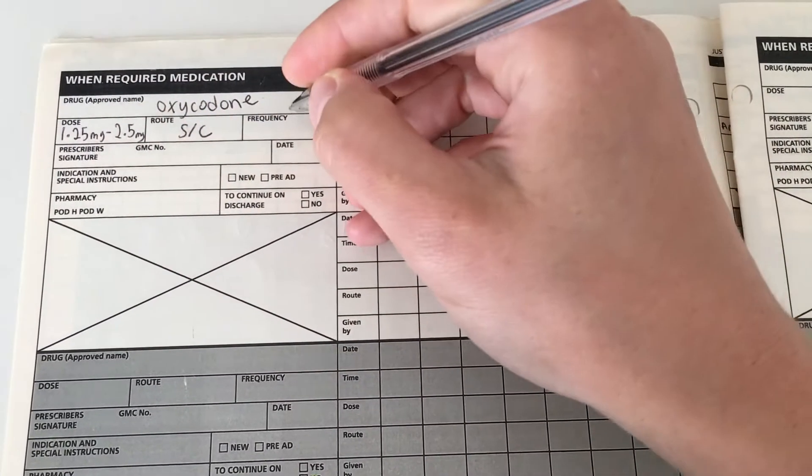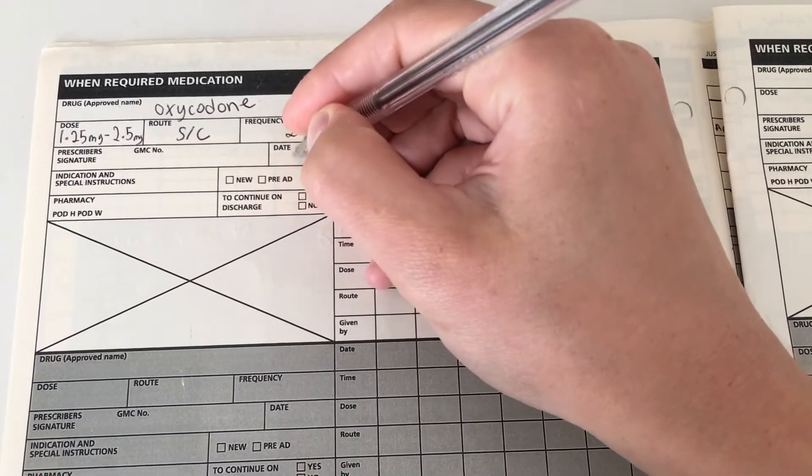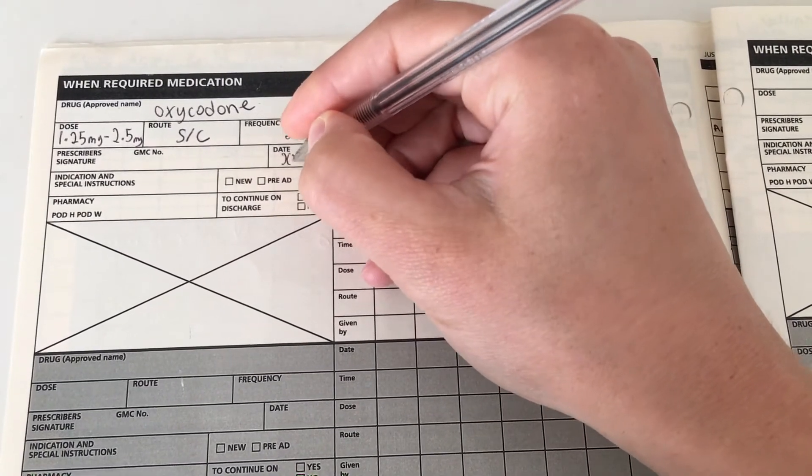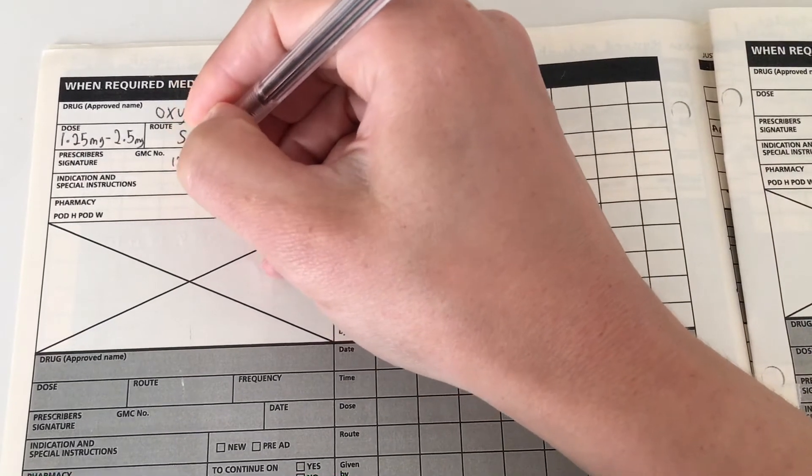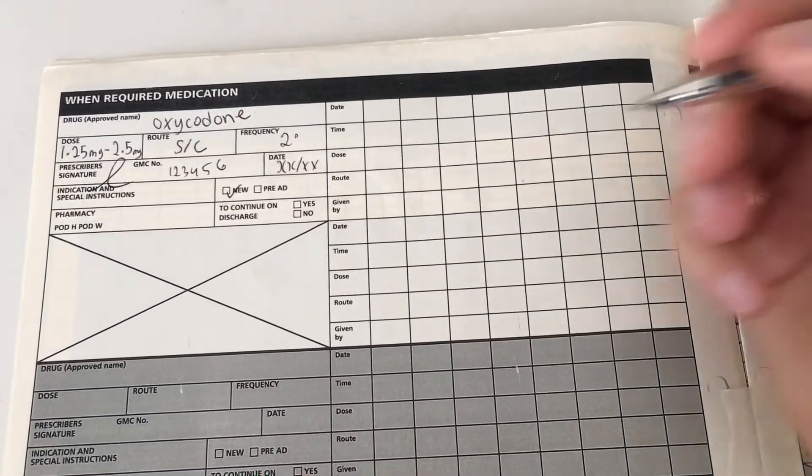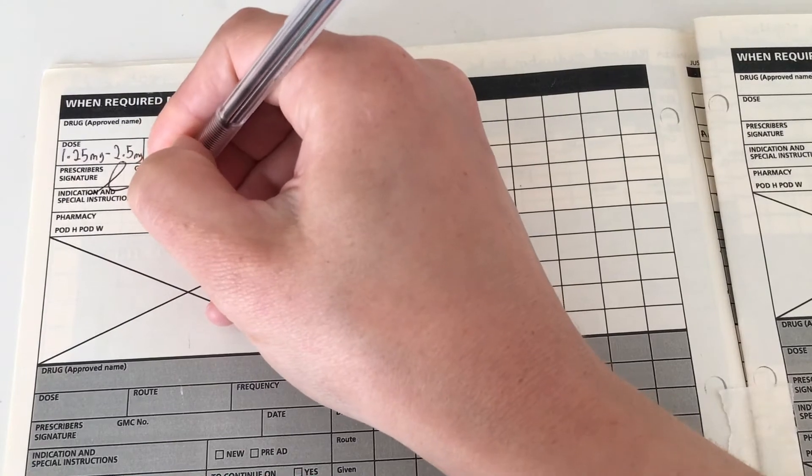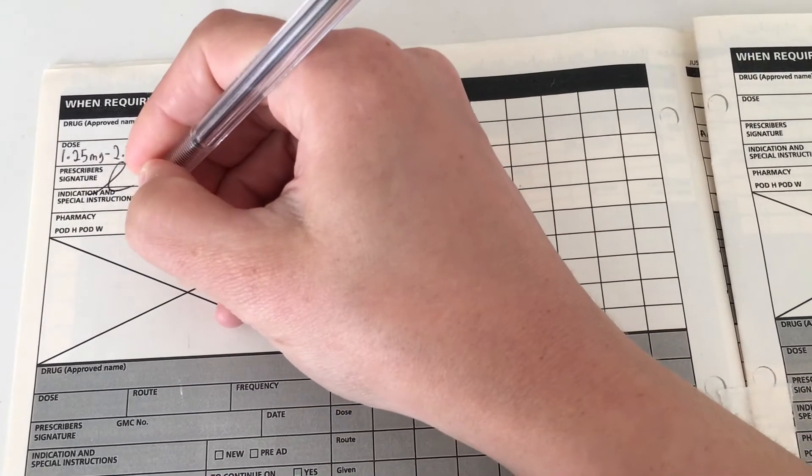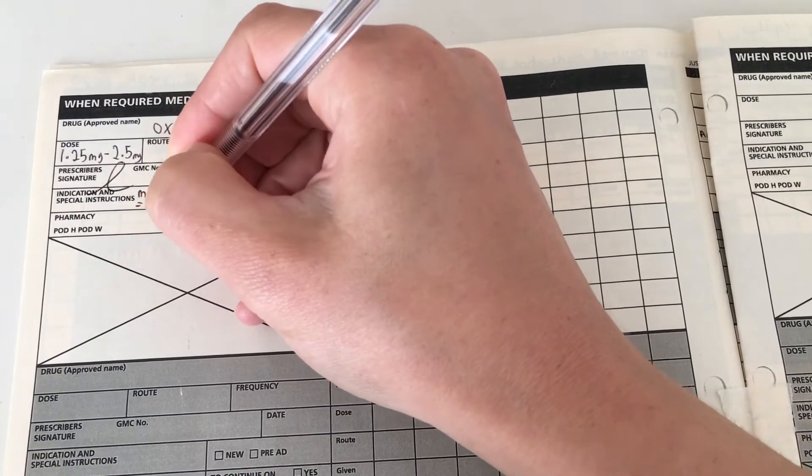So the first medication is oxycodone. Now this is given for pain management and to help with breathing. The dose is quite small as you can see, so 1.25 to 2.5 milligrams, and it's okay to write a range for this. The frequency should not be put in range however, so here I've put two hourly. I've signed and dated, put my GMC number, and I've written the max dose as 15 milligrams in 24 hours.